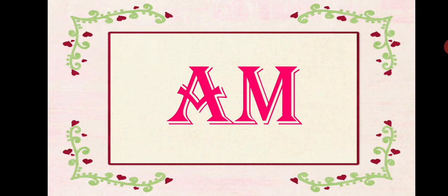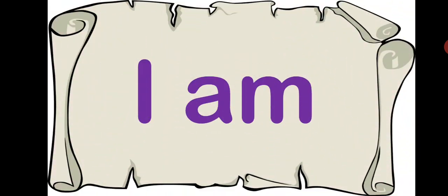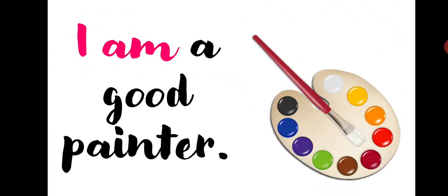Firstly, let's discuss about the second brother that is am. Am is very shy. He doesn't like to have too many friends. He has only one friend, that is I. He only lives with I. For example, I am. See, I and am are together here. Now let's use them in a sentence. I am a good painter. See, I and am are used together here.